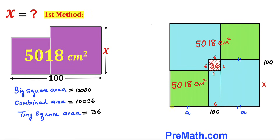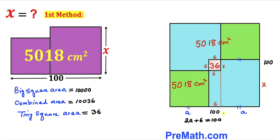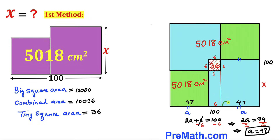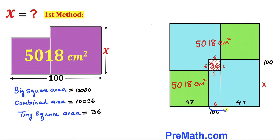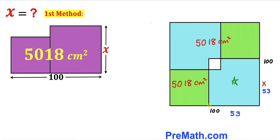We know this whole length is 100 centimeters, so I can write 2a plus 6 equals 100. Subtracting 6 from both sides, 2a equals 94. Dividing both sides by 2, a equals 47 centimeters. Therefore this side length is 47 and this side length is 47 as well. The side length of the blue square is 6 plus 47, which gives us 53 centimeters.